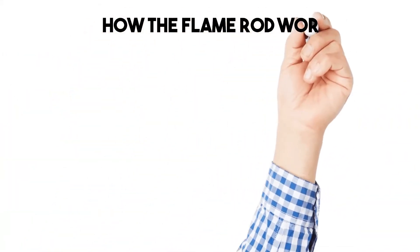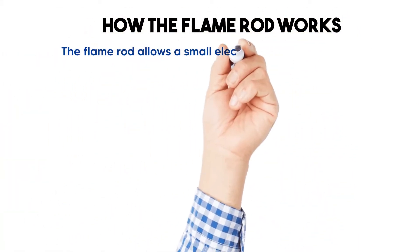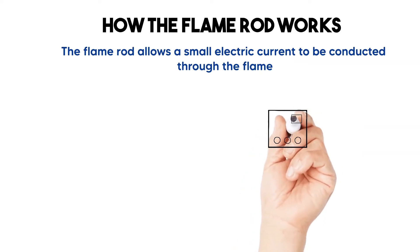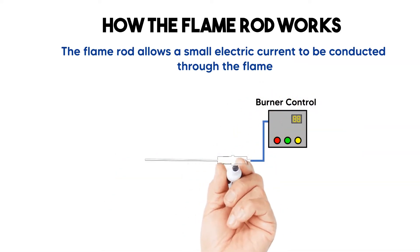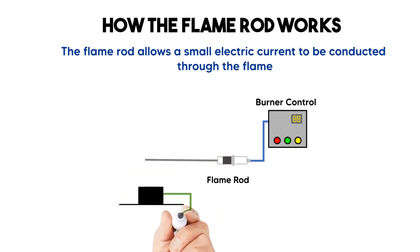How the flame rod works. The flame rod or ionization detector allows a small electric current to be conducted through the flame. To achieve this it is necessary to place the rod so it touches the flame so that the current flows from this rod to the ground through the flame.